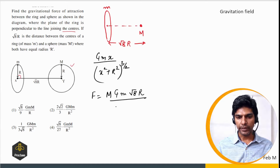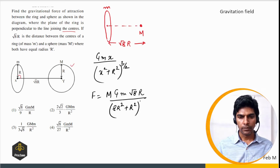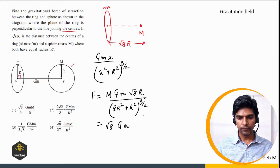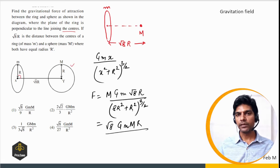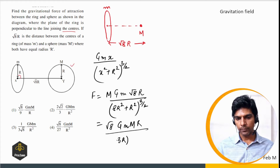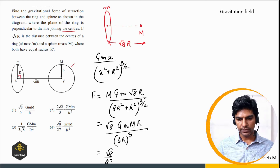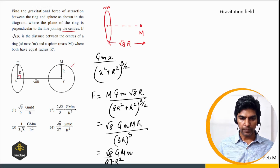Force = m × field = GMm·√8R / (8R² + R²)^(3/2) = GMm·√8R / (9R²)^(3/2) = GMm·√8R / (27R³) = (√8/27)·GMm/R². This simplifies to option giving (√8/27)·GMm/R² as the answer.